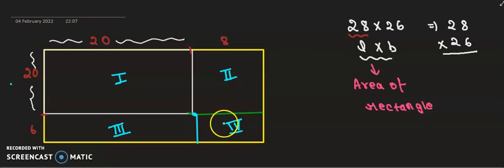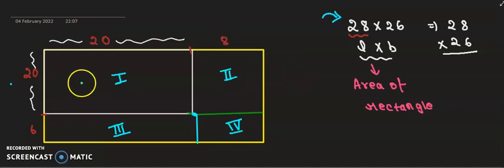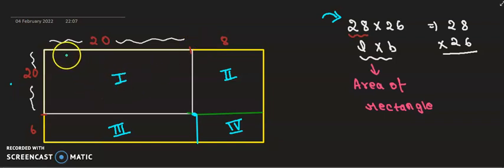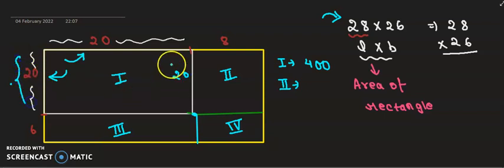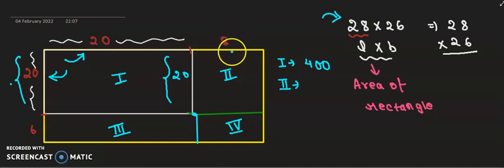We have a total of 4 rectangles, and we know that when we are multiplying two numbers, we are just calculating the area. So if I calculate the area of the first rectangle — area is length into breadth — clearly the length is 20 and width is 20, so the area is 20 into 20 which is 400. For the second rectangle, the length is 8 and width is 20, so the area is 20 into 8 which is 160.